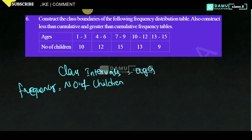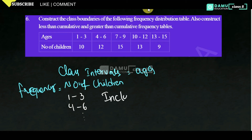They are already given what type of class intervals — that is, 1–3, 4–6, and so on. This is inclusive class intervals. Why? Because 3 and 4 are different. They are given inclusive class intervals and a frequency table.